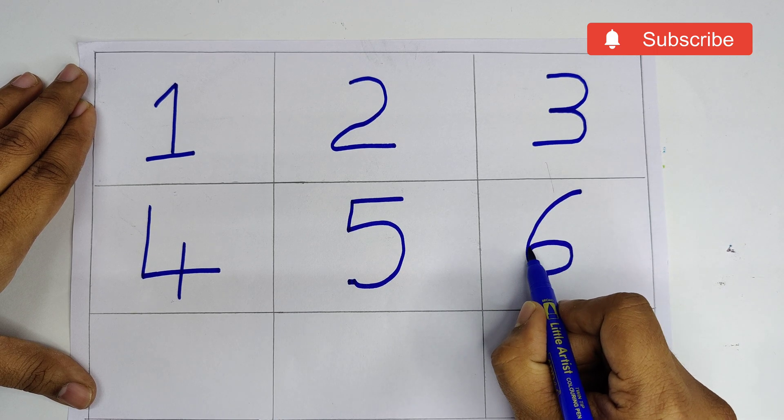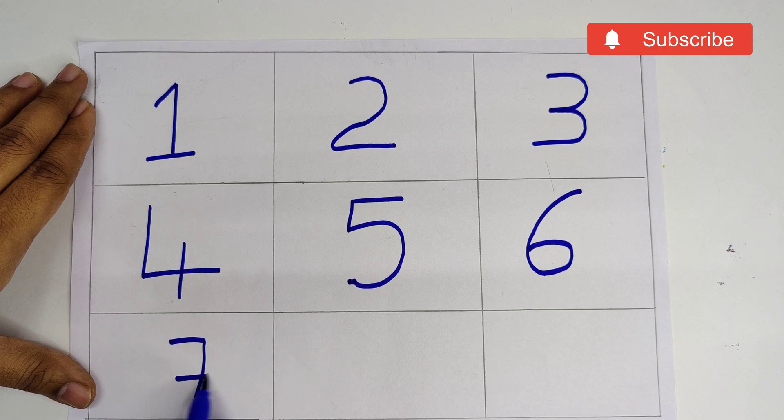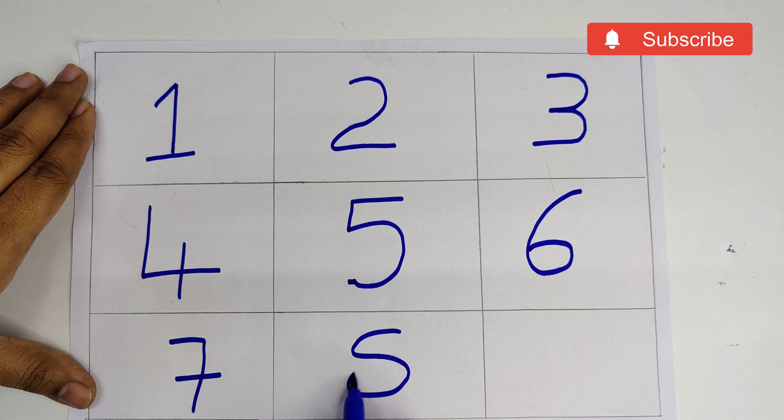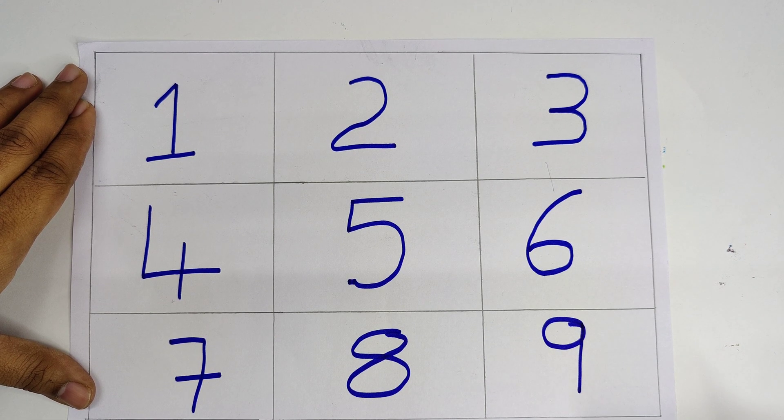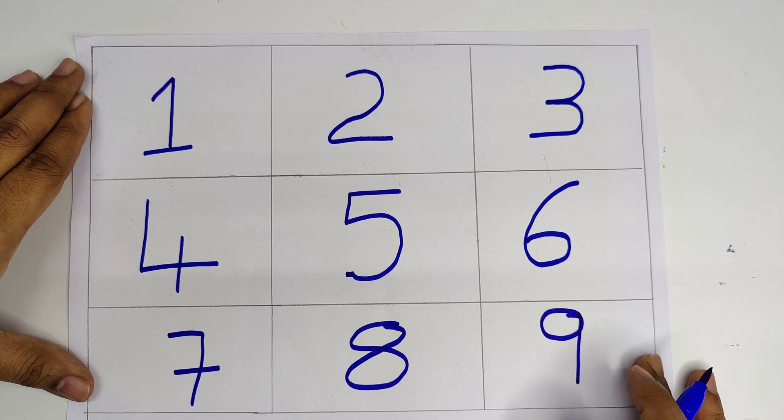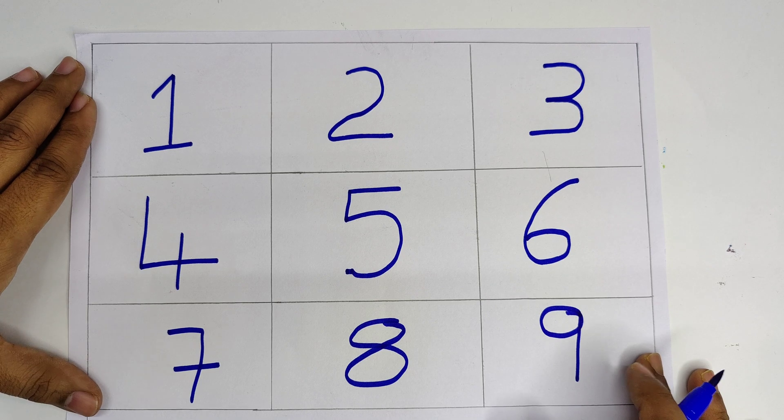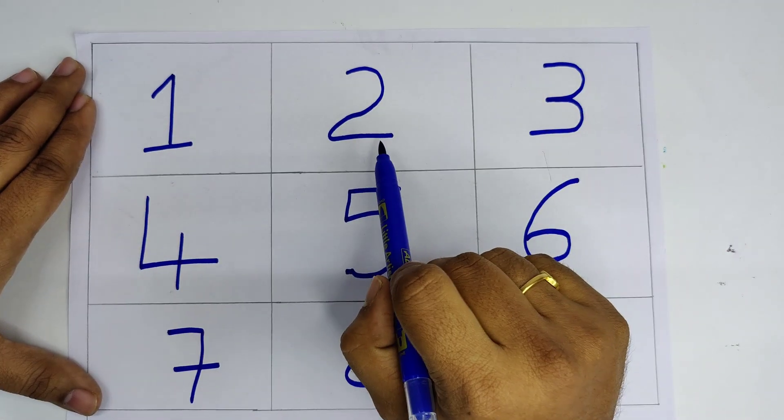Five, six, seven, eight, nine. Children, let's speak out with me. One, two.